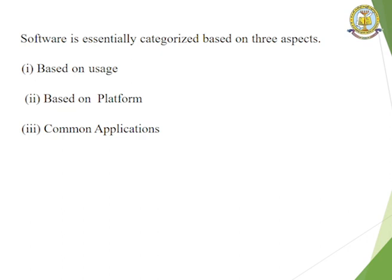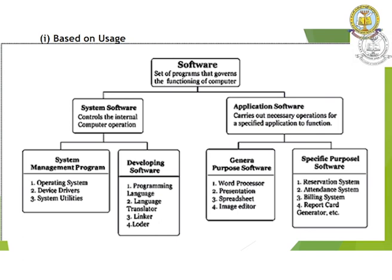Software is essentially categorized on three aspects: one, based on usage; two, based on the platform; and three, common applications. Based on usage, software is the set of programs that governs the functioning of computers. It is divided into two parts: system software and application software. System software controls the internal computer operations. It is further classified into system management programs and developing software. In the system management program, we have operating systems, device drivers, and system utilities.